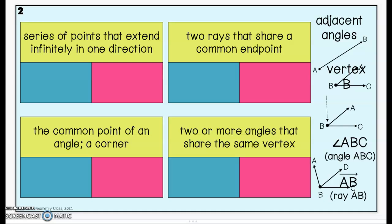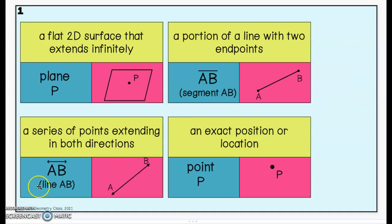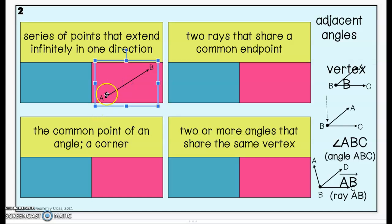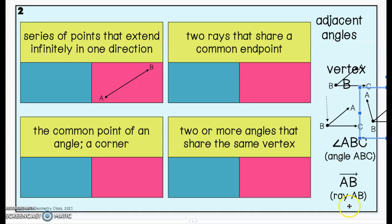A series of points that extend infinitely in one direction — if we look back at what we just did, this new vocabulary word is kind of a combination of a segment and a line, and it is called a ray. A series of points that extends infinitely in one direction is a ray. Here's our picture for that: it has one endpoint and then one arrow because it goes forever in the direction of the arrow.